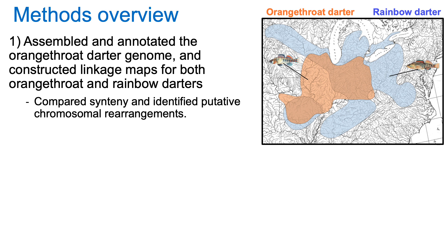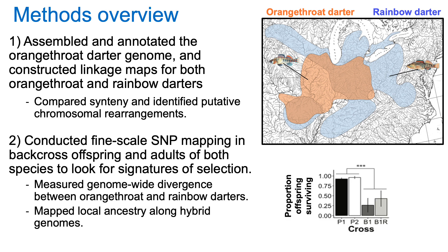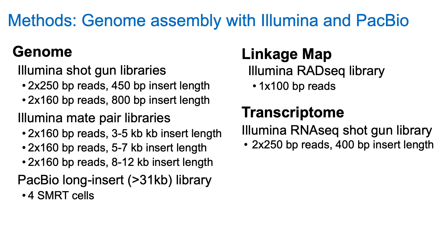I assembled and annotated the first draft genome for a darter species — for the orange-throat darter — and I constructed linkage maps for both orange-throat and rainbow darters. This allowed me to compare synteny and identify putative chromosomal rearrangements between their genomes. I also conducted fine-scale SNP mapping in backcross offspring and adults of both species to look for signatures of selection consistent with postzygotic barriers. For the genome assembly I used a combination of Illumina and PacBio sequencing; for the linkage map I used RAD sequencing; and to make a transcriptome for genome annotation I used RNA-seq.